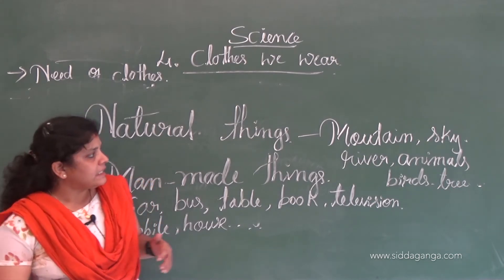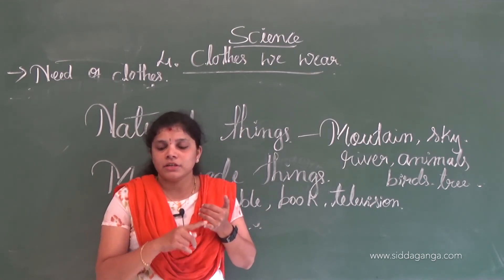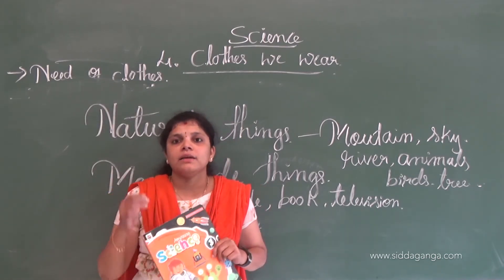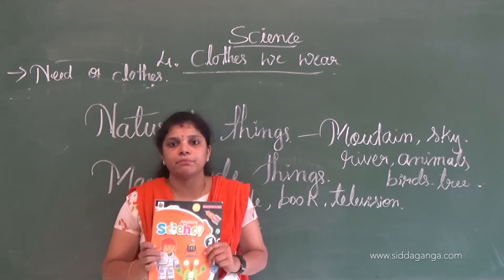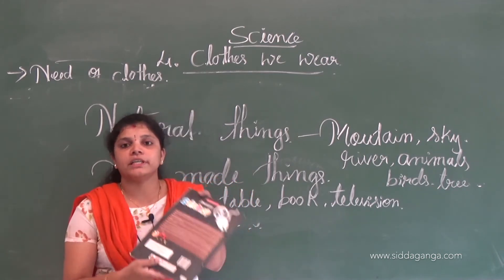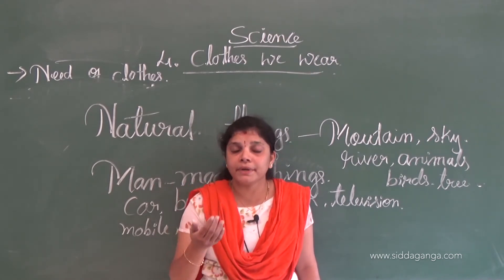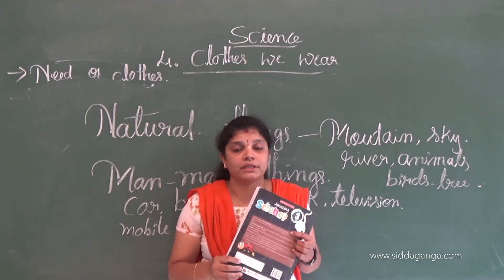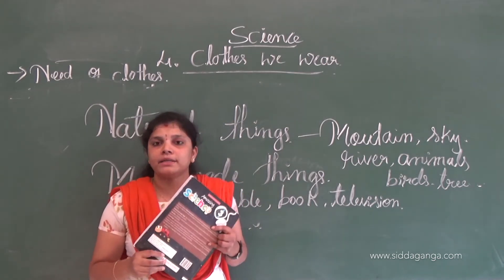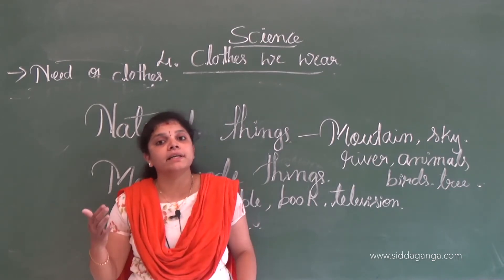For example, birds can move from place to place, but a book cannot move. Birds need food, but a book does not need food. Birds breathe, but a book does not breathe. Birds can undergo reproduction, but a book cannot reproduce. So a book is a non-living thing and a bird is a living thing.